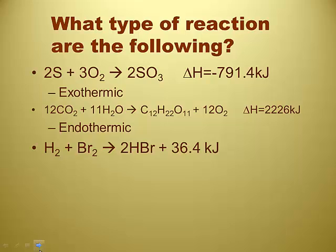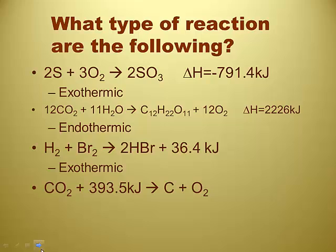There's the second way, not as popular as the first, where they include the energy — the value of the energy — in the body of the reaction. Now I've actually got to think about it. Energy is a product, therefore the reaction is making energy. If it's making energy, it's exothermic, because the energy is coming out of the reaction — that's the excess energy. That's why it's written on the right. And then there's the same method but with the energy on the left side of the reaction, which is the reactant side. It's endothermic — you need an outside source of 393.5 kilojoules for that reaction to occur, because this reaction needs the energy in order to happen.